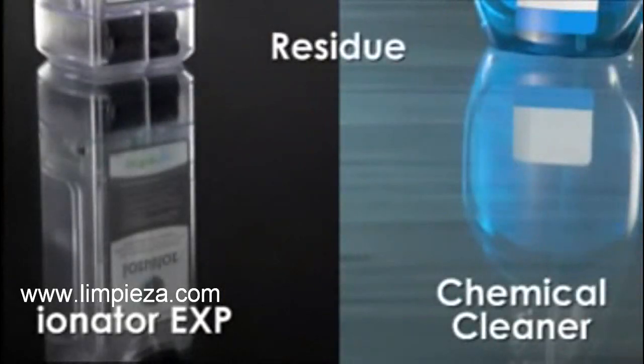Best of all, cleaning with the Ionator EXP leaves behind no chemical residue. We're using a glass table top to show how chemical cleaners leave behind residue on everyday surfaces. On the left is a piece of glass cleaned with the Ionator EXP and paper towels, and on the right, glass cleaned with a popular chemical cleaner and paper towels.